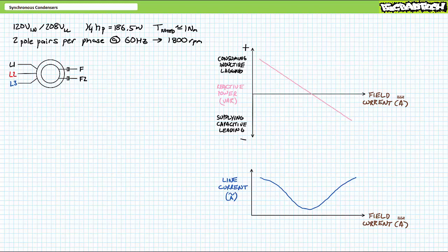By adjusting the magnitude of field current such that the reactive power supplied by the synchronous condenser perfectly counteracts that drawn by the load, reactive power will bounce back and forth at the point of use and the source will stay out of it. Let's see if this is the case.